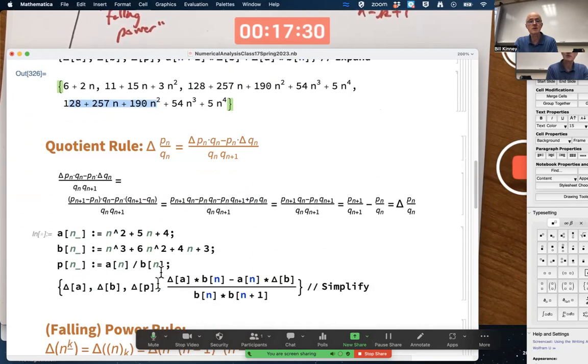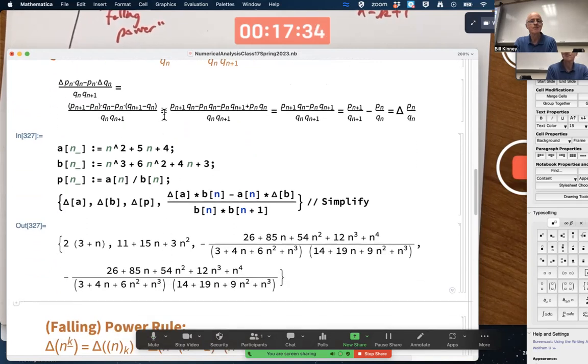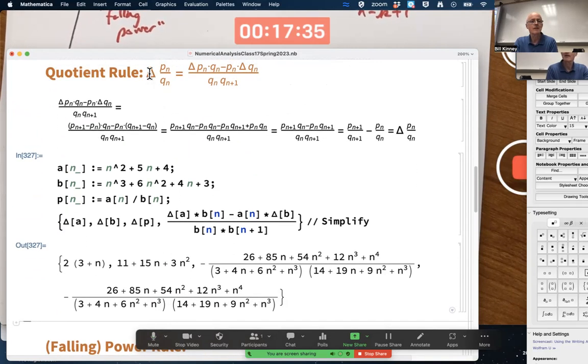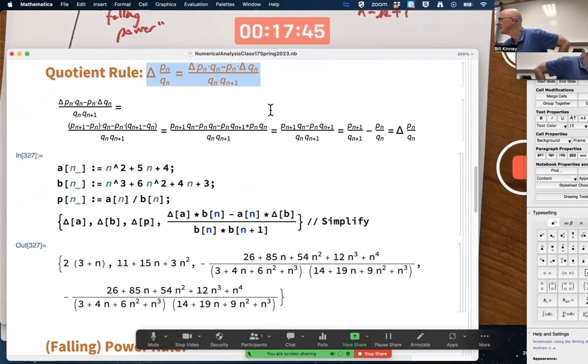There is a discrete quotient rule that you can confirm with an example as well. Is it low D high minus high D low over the square of what's below? Almost. Instead of squaring what's below, you multiply Q_N and Q_(N+1).